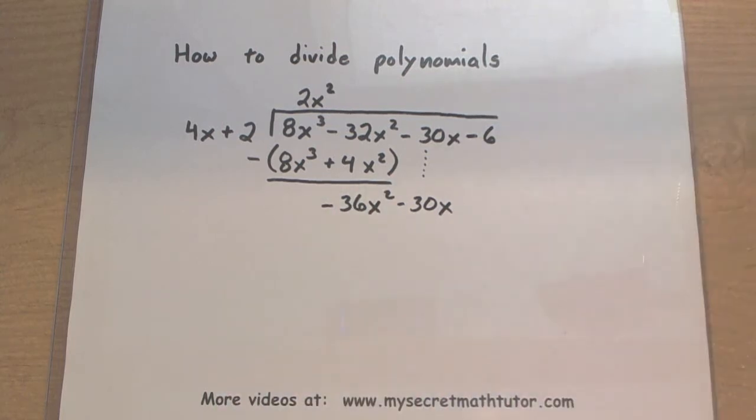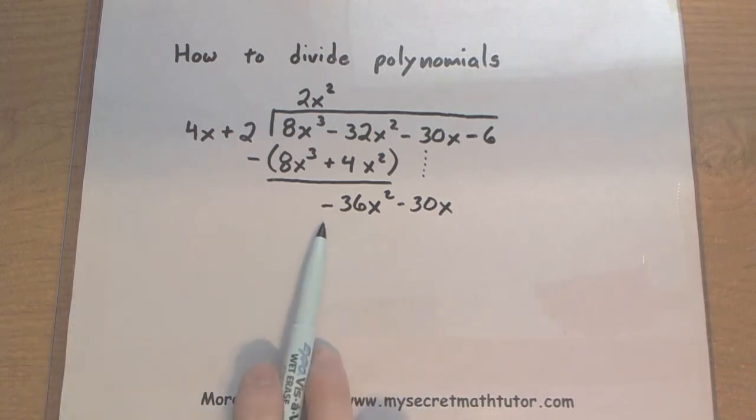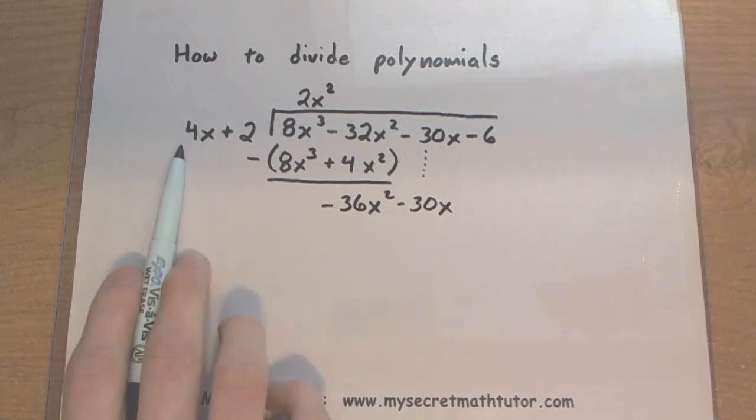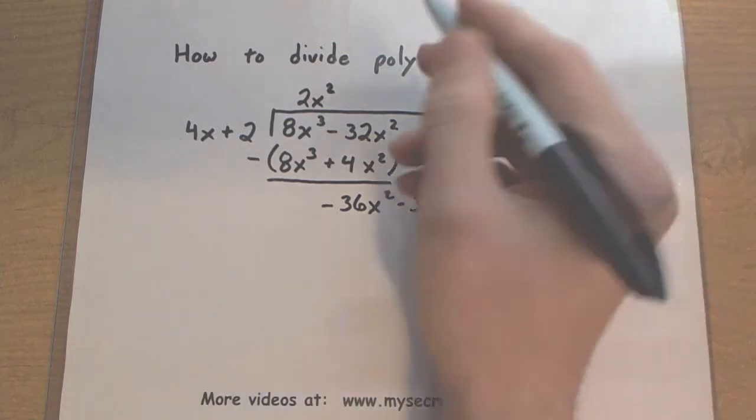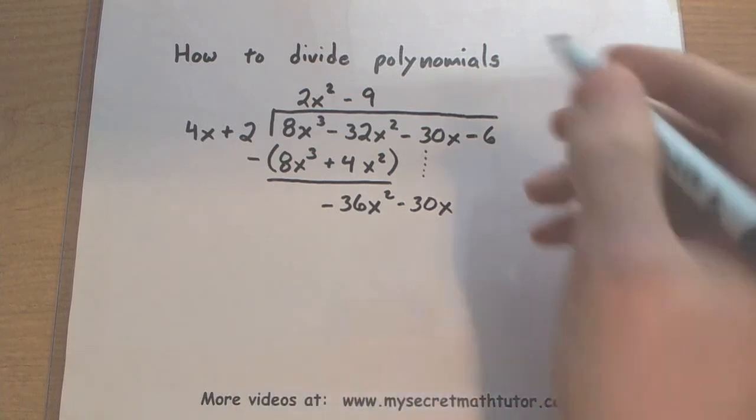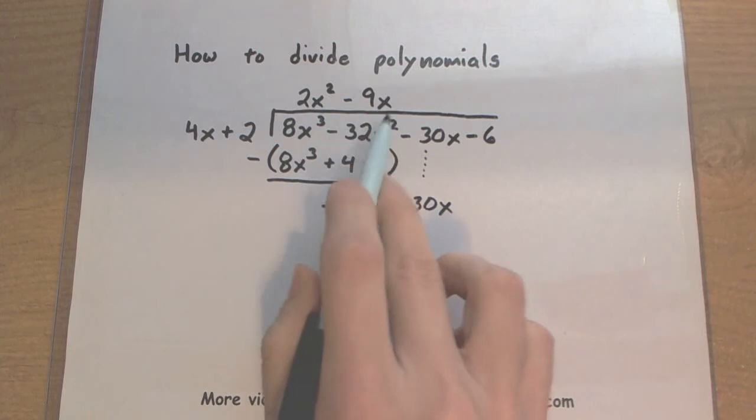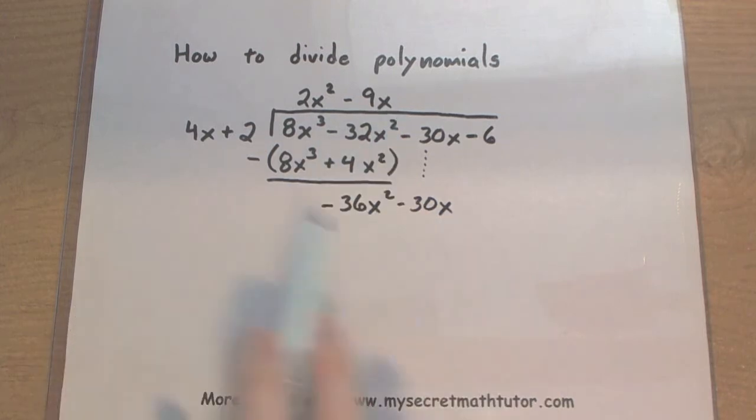So you'll notice I brought down that negative 30 and we'll do this again. So we think to ourselves, 4x multiplied by what will give us a negative 36x squared? Well I know 4 times negative 9 will give me the 36. So I'll put that there. And x multiplied by x should give me an x squared. So I think negative 9x multiplied by 4x will give me the negative 36x squared.